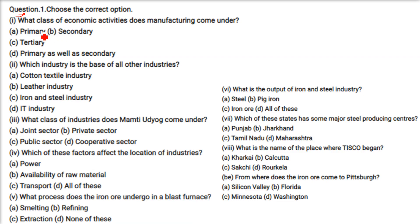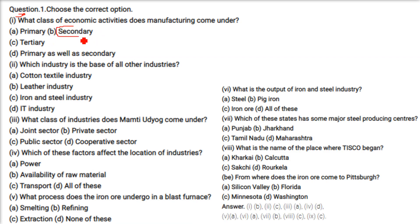We have to choose the correct option. What class of economic activities does manufacturing come under? This comes under secondary — it is a secondary economic activity. Which industry is the base of all other industries? The answer is the iron and steel industry; this is the base of all other industries.